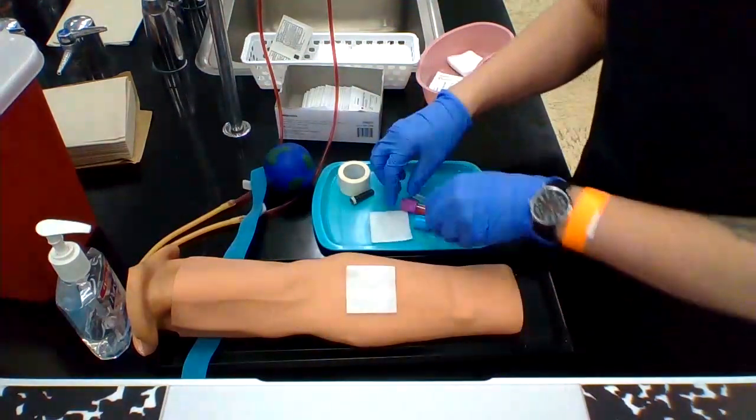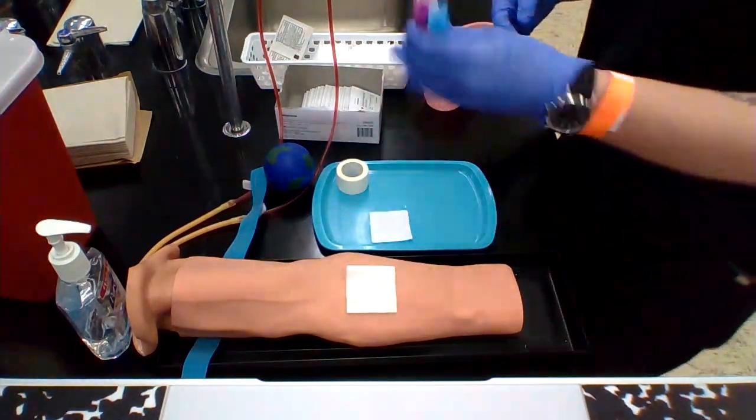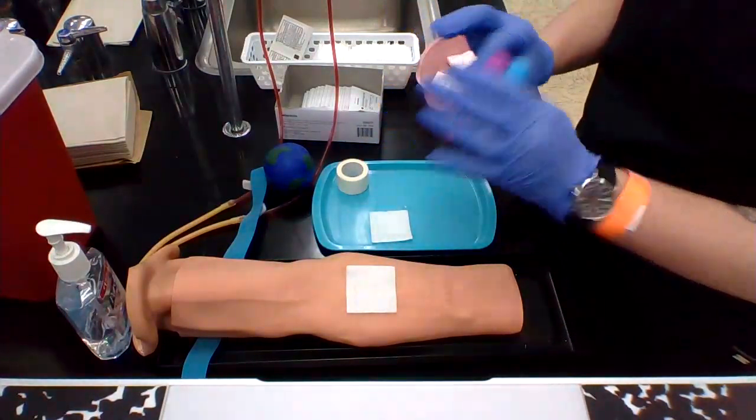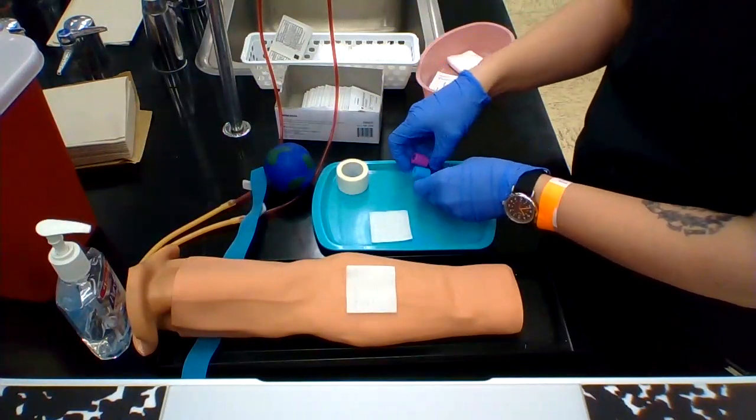Ask your patient to hold that. Invert your tubes about eight times. Label it. Check it with the patient. Put aside for processing later.